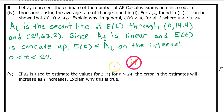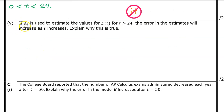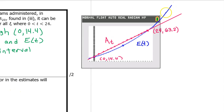CAUTION: Many students are losing points on the AP exam because they are using vague words like 'the function,' 'the curve,' or worst of all, 'it.' Avoid these words. Instead of saying 'the function is concave up' or 'the curve is concave up' or 'it is concave up,' make sure to say 'E of T is concave up.' B, Part 5: If A(T) is used to estimate the values of E of T for T greater than 24, the error in the estimates will increase as T increases. Explain why. A(T) and E of T have the same value at T equals 24. However, because A(T) is linear while E of T is concave up, as T increases the difference between E of T and A(T) will increase — thus the error will increase.